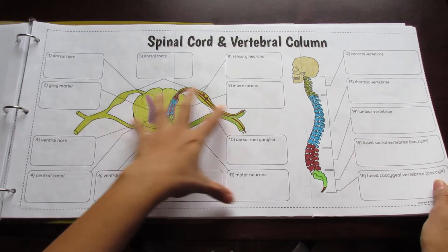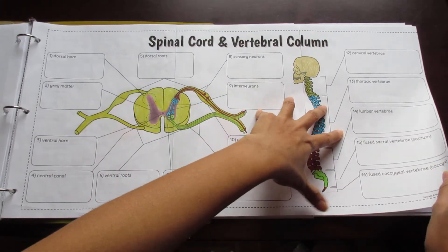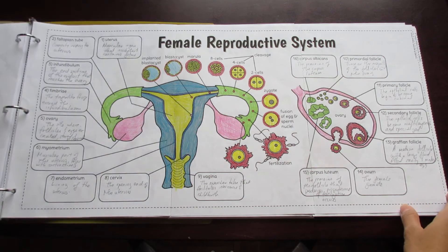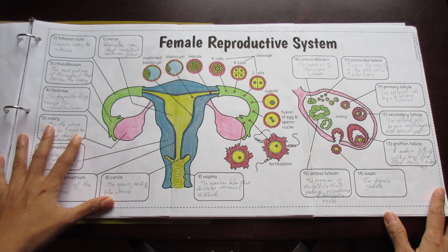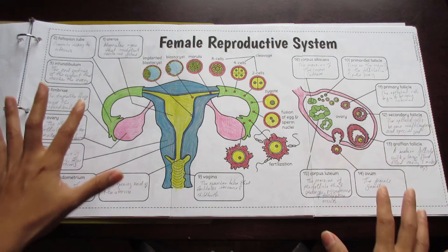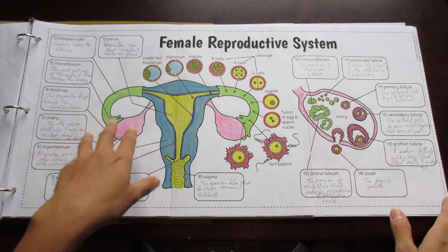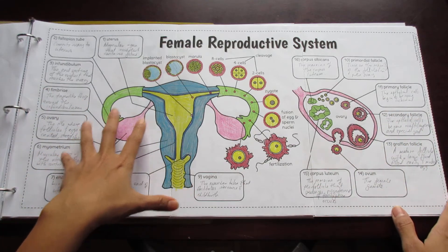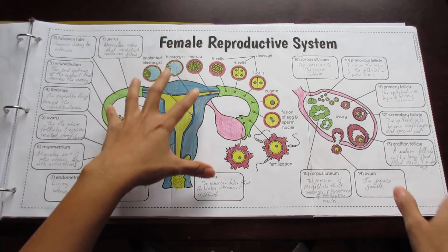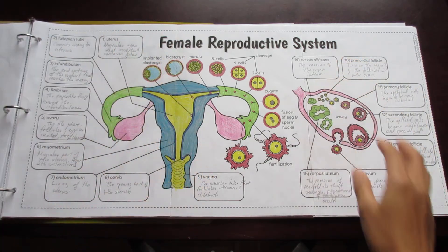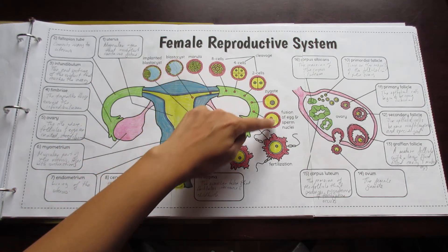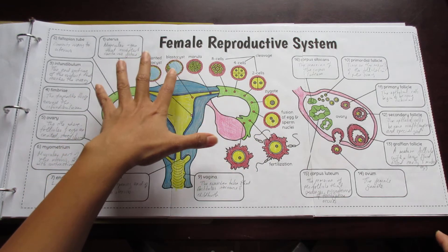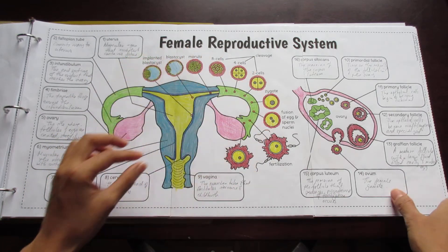Here's the spinal cord and vertebral column. This one's the female reproductive system, and this one got a little frisky and decided to fill it out. So it shows both the uterus and what's going on in the ovary, as well as the different stages of blastocysts and embryo formation.